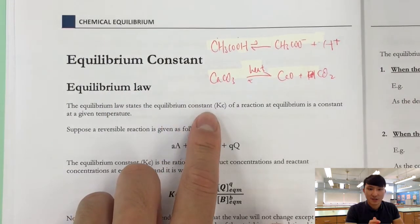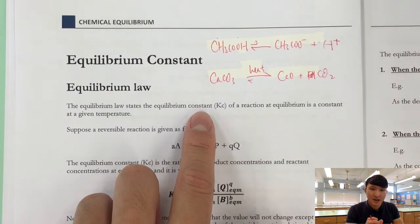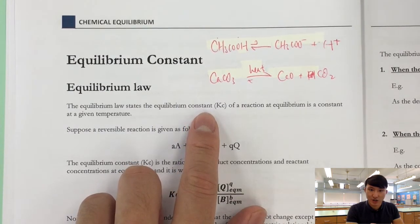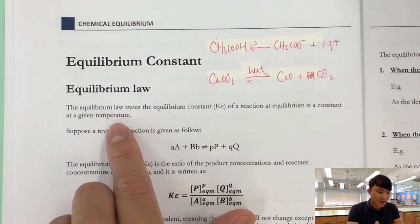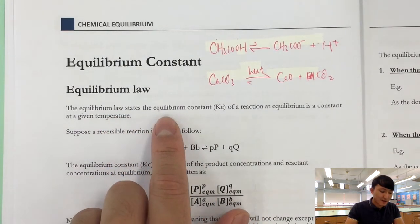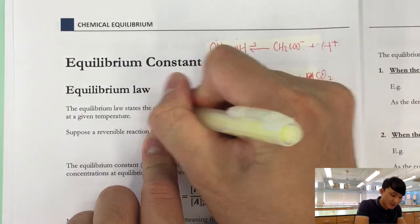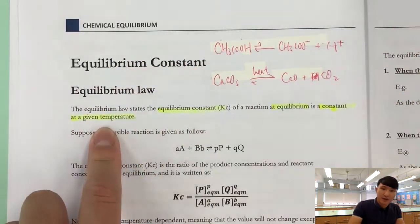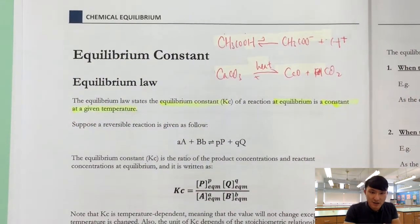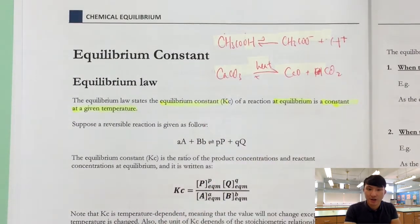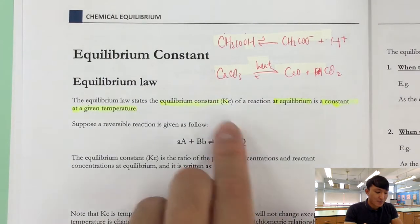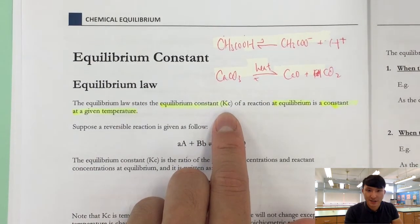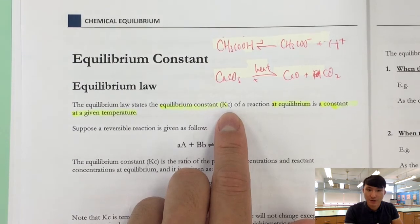The equilibrium constant, as you can tell, is a constant — it is a number that does not change except with temperature. The equilibrium law states that Kc is a constant at a given temperature. When temperature is constant, Kc for a particular reaction is constant, no matter what concentration you use or what pressure you exert on the system. The symbol is Kc — bear that in mind because we will be using it very often.